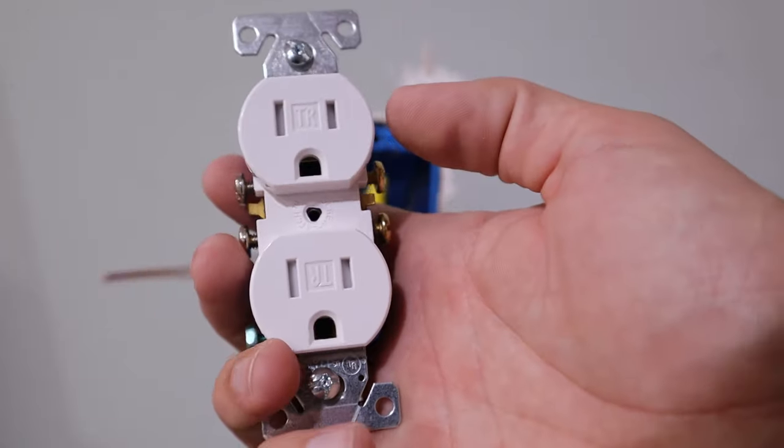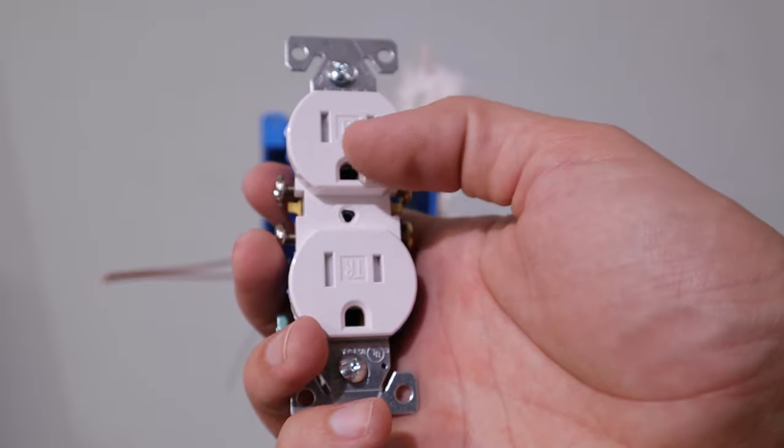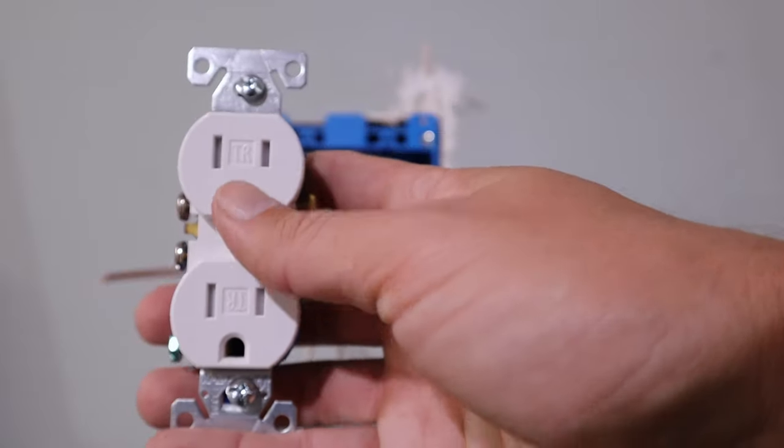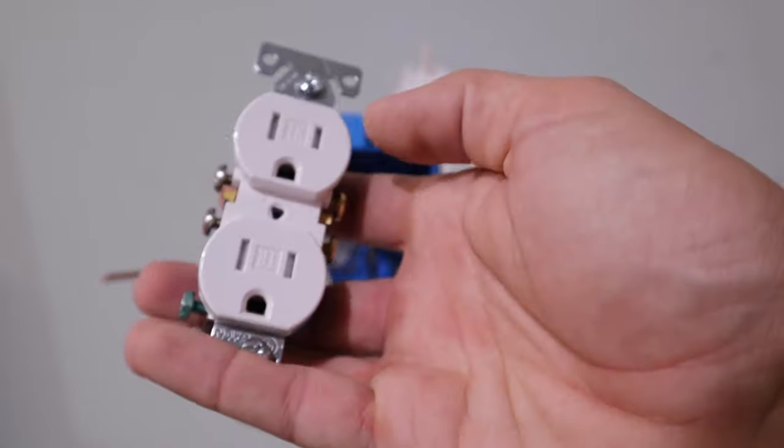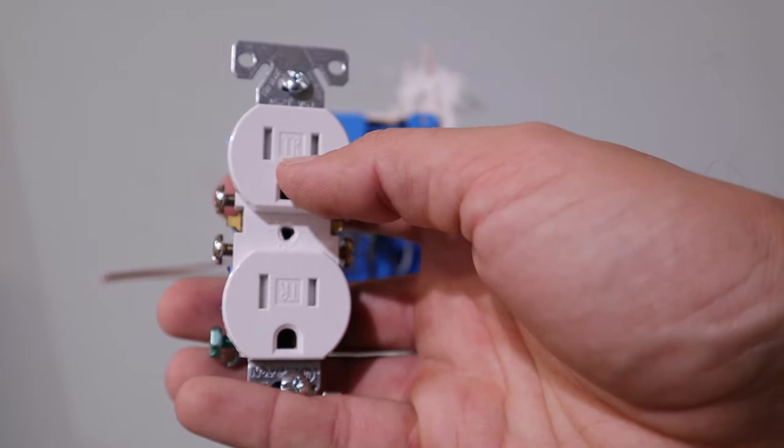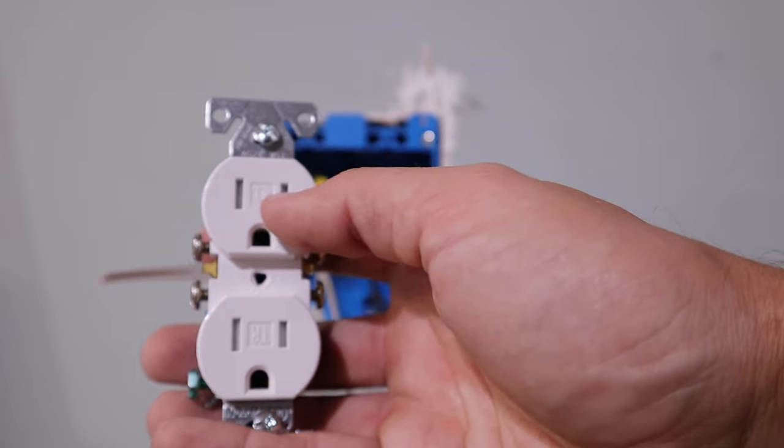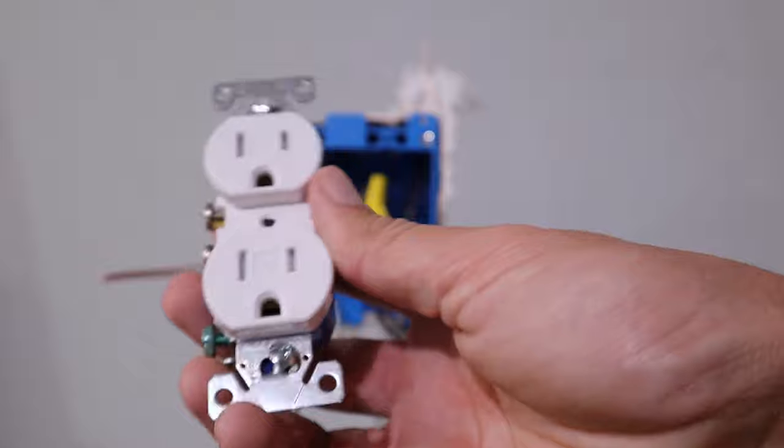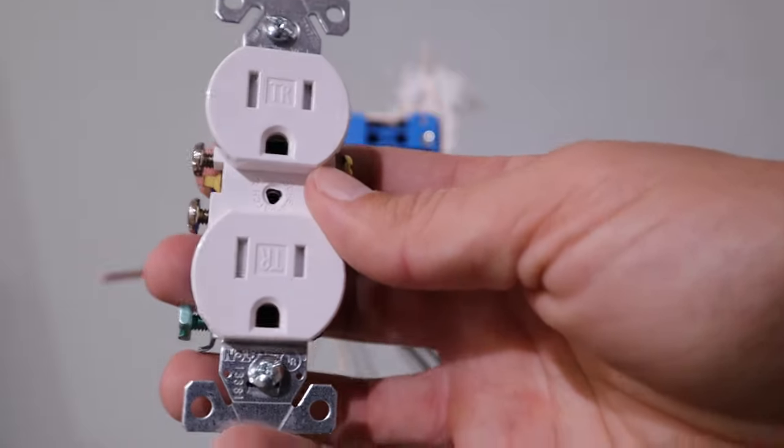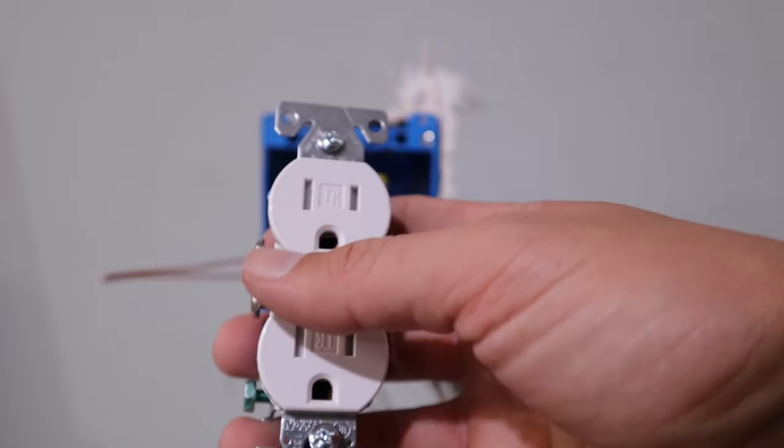Something to note about the outlets is nowadays you're going to need to be looking for these tamper resistant outlets. You'll know that they're tamper resistant. It'll say TR on them. I mean, it'll say tamper resistant on the box they come in as well.